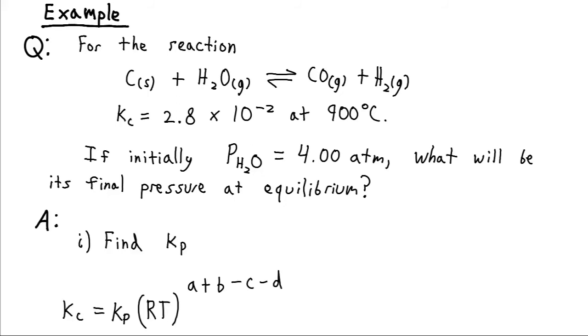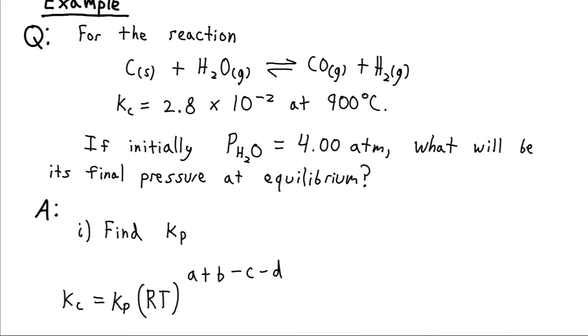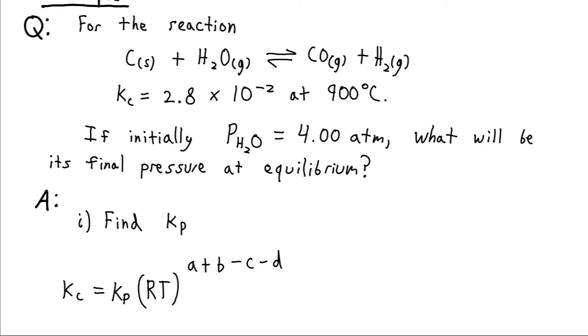Well, the first thing we need is we need to know the equilibrium constant for pressures here, since we want to do our final calculation in terms of pressure. So we'll use the expression we developed, Kc is equal to Kp times RT raised to the power of all the coefficients in the expression. And remember that if we have something that's not a gas, we're going to set that as being 0.